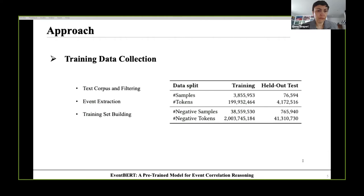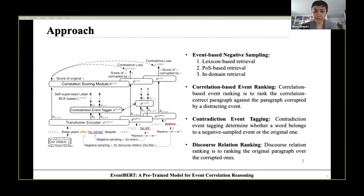Finally, we split the pre-training corpus into a training set and a held-out test set. We propose three self-supervised contrastive learning objectives: correlation-based event ranking, contradiction event tagging, and discourse relation ranking.